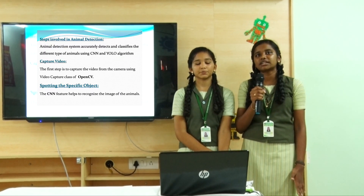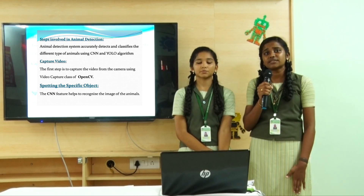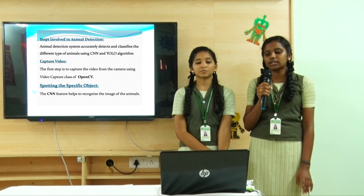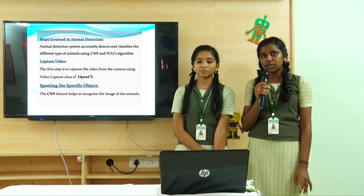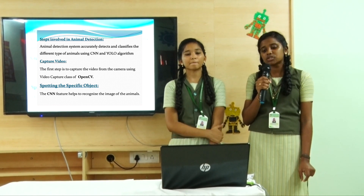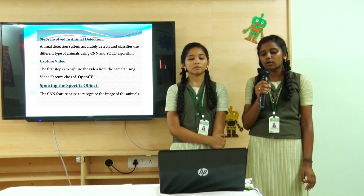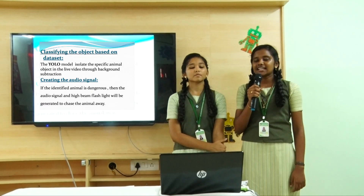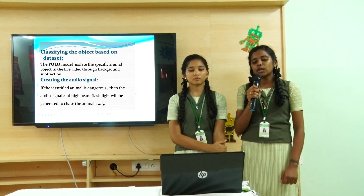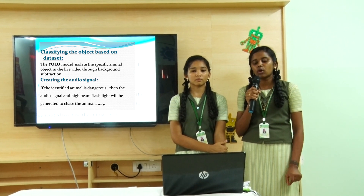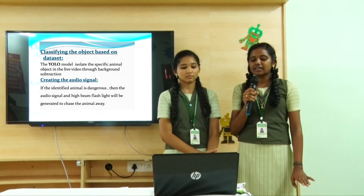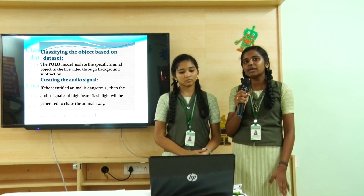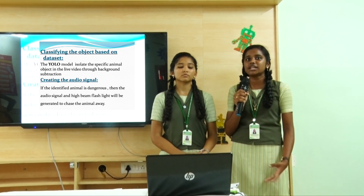The steps involved in animal detection are as follows. The animal detection system accurately detects and classifies different types of animals using CNN and YOLO v3. First, video is captured using the video capture class of OpenCV. The CNN features help recognize the image of the animal. The YOLO model then isolates the specific animal object in the live video through background subtraction. If the identified animal is dangerous, an audio signal and high beam flashlight are generated to chase the animal away.